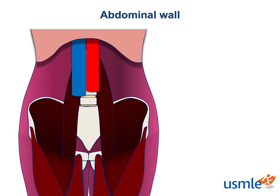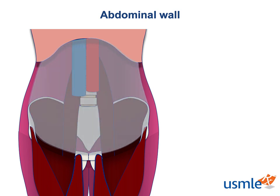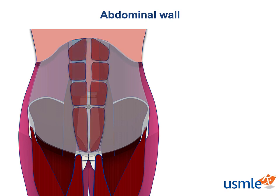Despite being the bread and butter of most surgeons, the abdominal wall can be a confusing place if you're just starting out. The abdominal wall proper consists of everything outside the peritoneum, a thin bit of membrane that surrounds the abdominal organs. The transversalis fascia is a pretty flimsy bit of fascia that lies directly on top of the peritoneum. Most of the rest of the structures are centered around the rectus abdominis muscle, which anchors the sternum to the pubic bone in the middle, or the inguinal ligament, which stretches from the anterior superior iliac spine to the pubic bone.